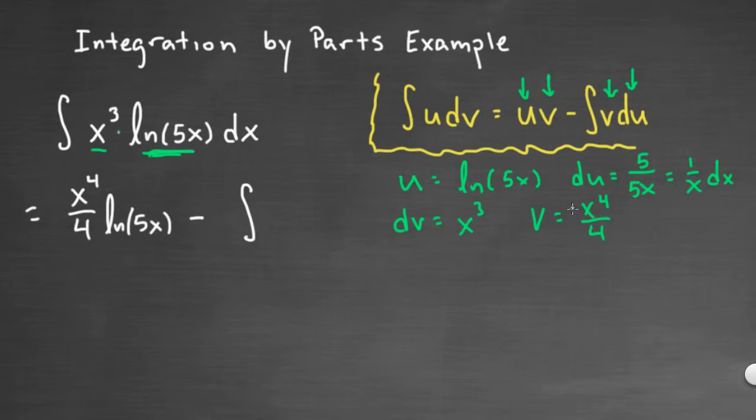And something I like to do is, if I have any constants like this 1/4 that I see here, I like to pull those outside the integral, because you can pull constants outside of an integral. And then v du, I'll also have an x to the 4th times 1 over x dx. x to the 4th over x would simply be x cubed dx.